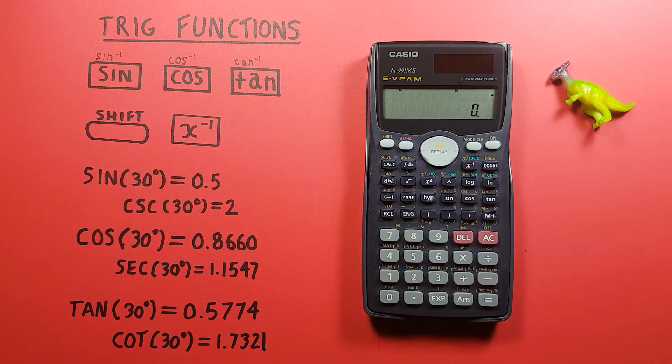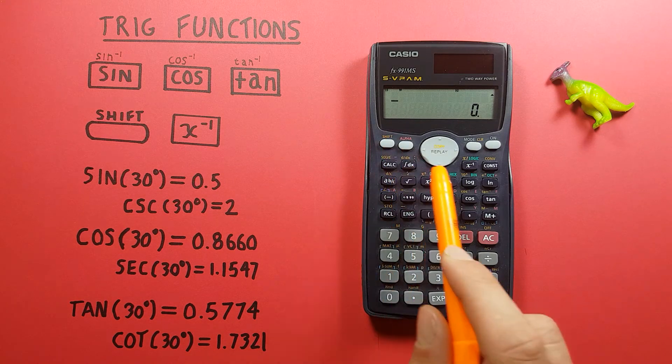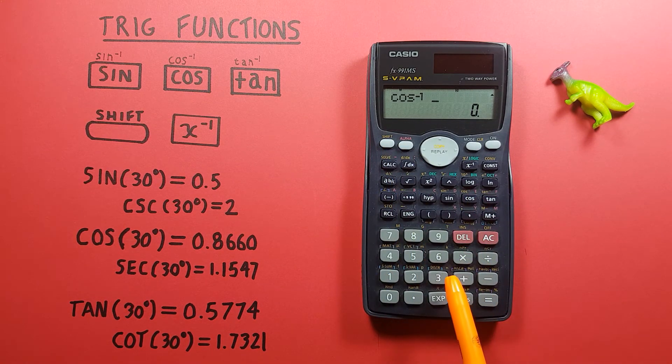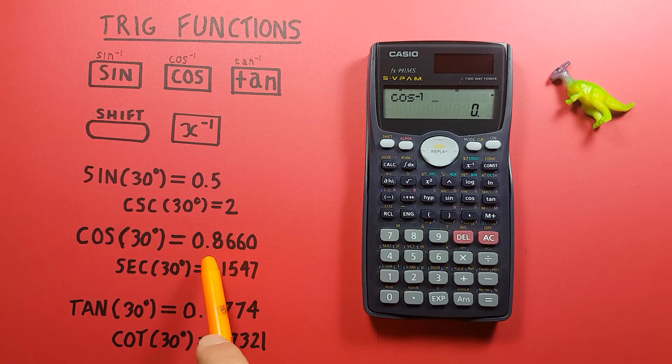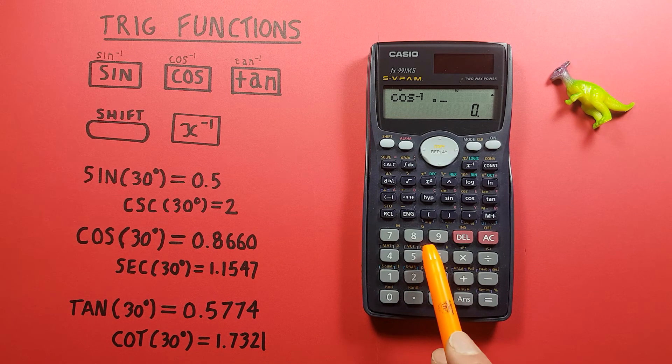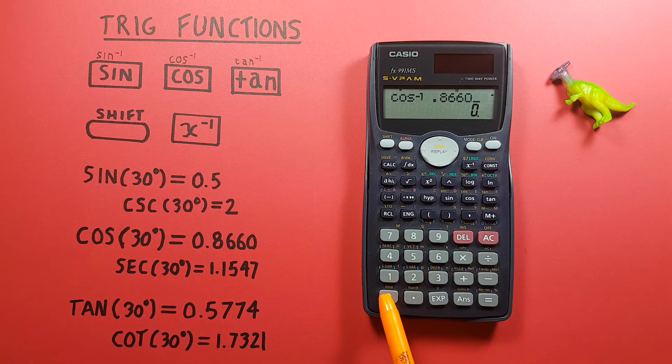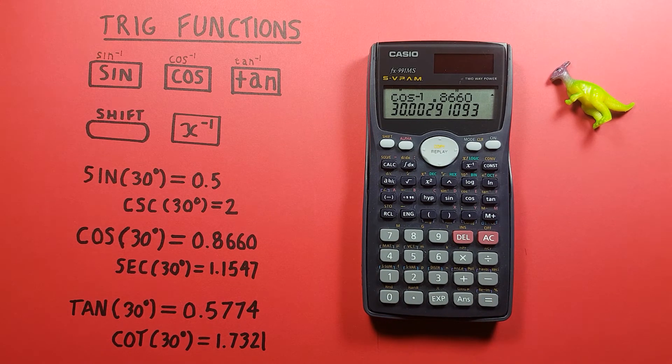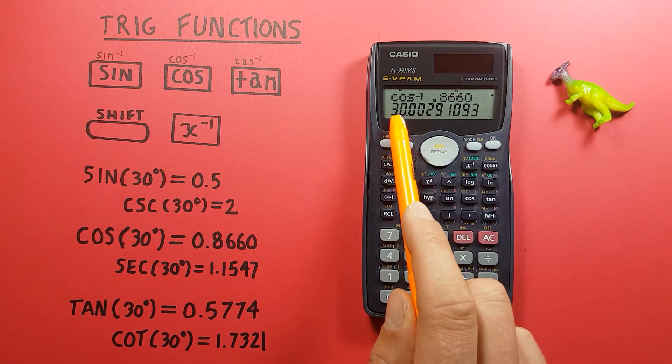Same thing with arc cos. If we press shift cos and then remember we've rounded this to 0.8660, so 0.8660 equals, this brings us back to what would round to 30 degrees.